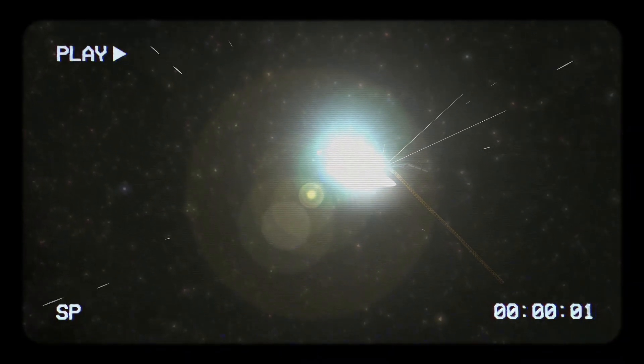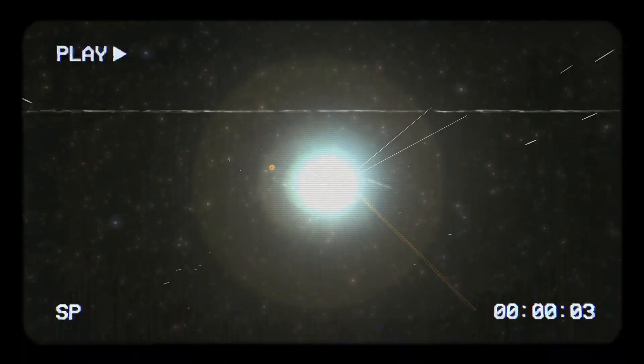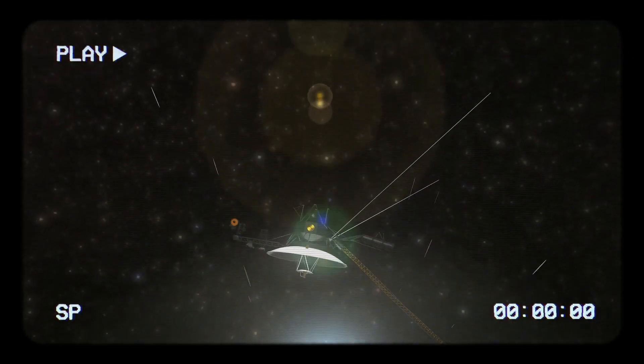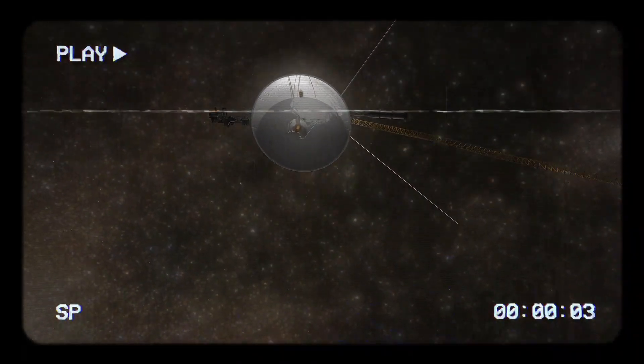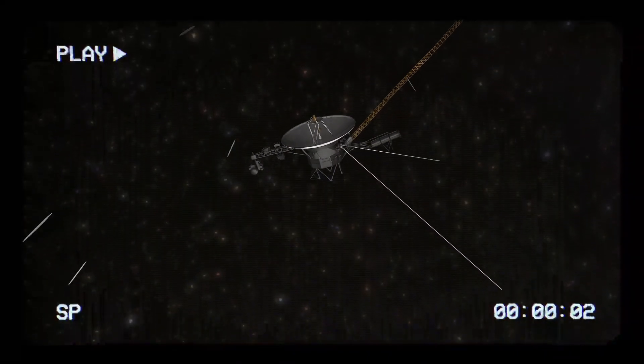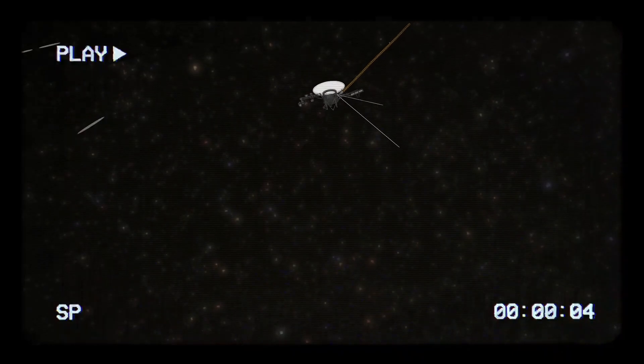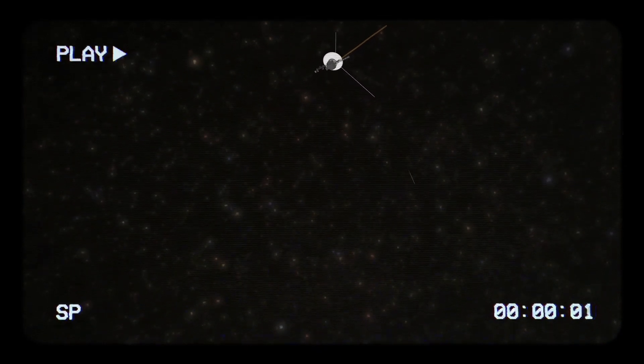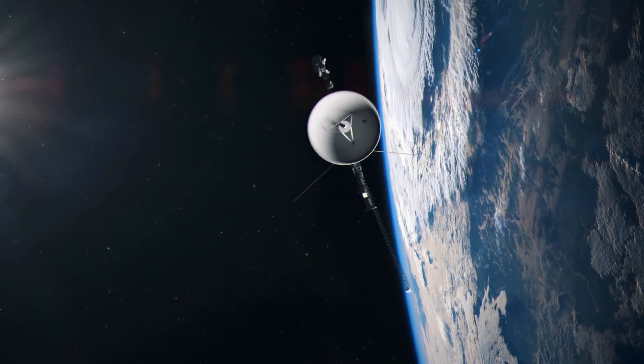the Voyager probes unveil the intricate interaction between our sun and the vast expanse filling the space between stars in the Milky Way galaxy. Without Voyager 2's data, it would remain unclear whether Voyager 1's observations were indicative of the entire heliosphere or specific to its crossing point.